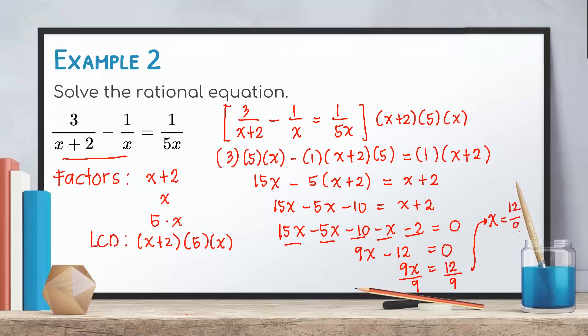Hence, x equals 12 over 9. We need to reduce 12 over 9 to lowest terms. Since 12 and 9 are both divisible by 3, we get the final answer x equals 4 over 3.